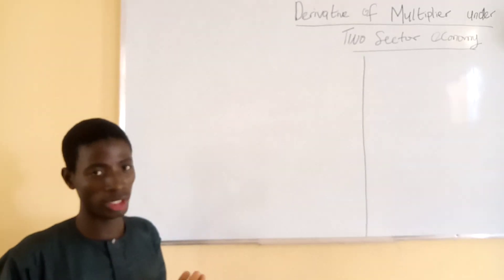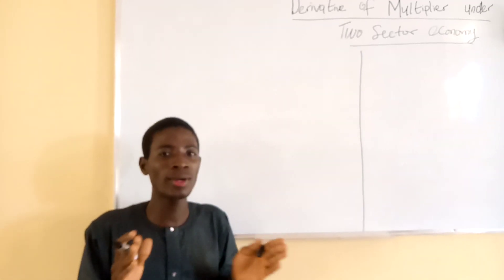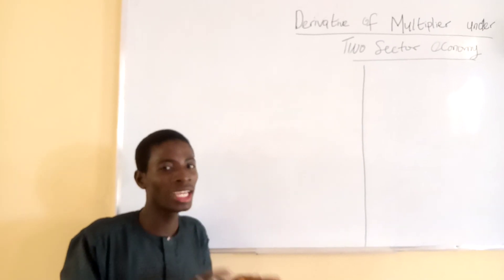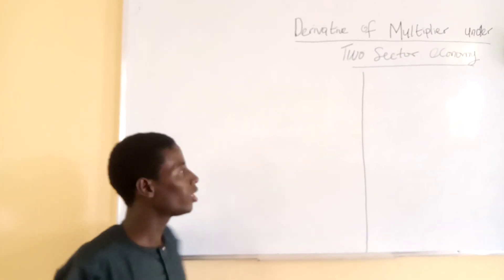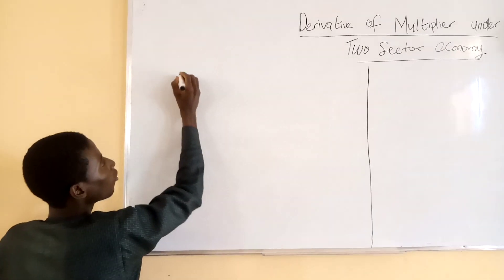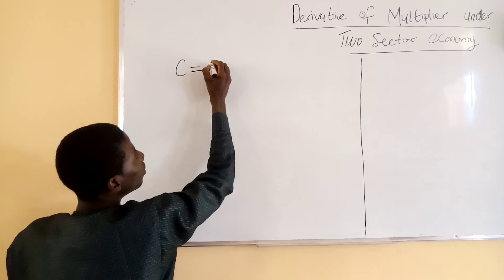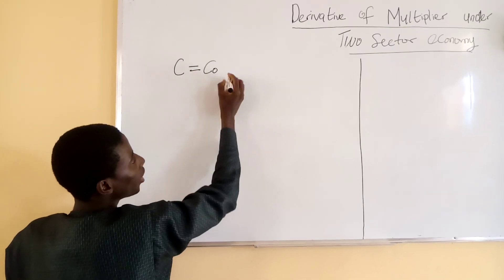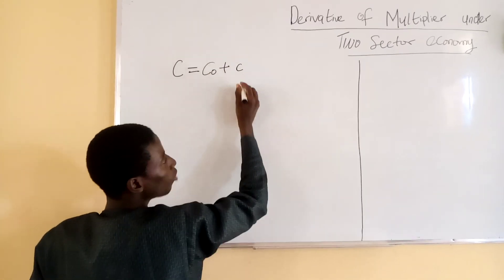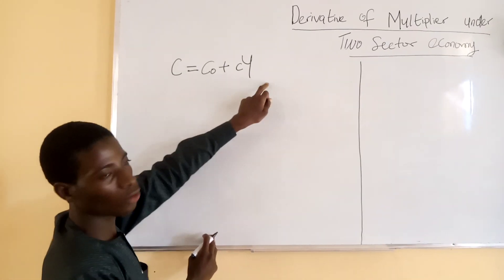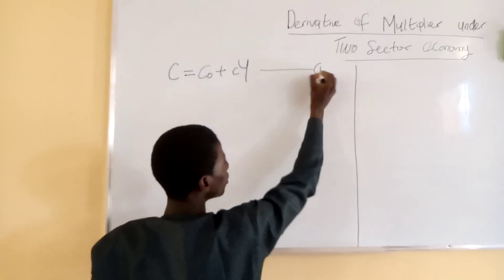What we mean by two-sector economics is deriving the Y, the output, in respect to consumption and investment. We have a function C equal to C sub zero plus c times Y. That simply means our consumption is a function of Y. We can say this is equation one.